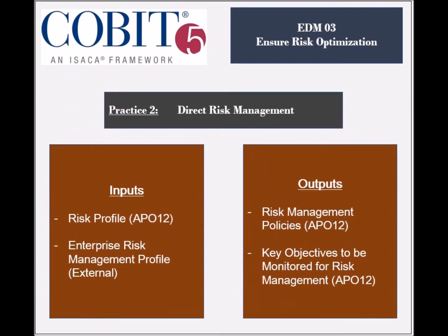The second practice, Direct Risk Management, receives two inputs: the Aggregated Risk Profile from APO-12, and the Enterprise Risk Management Profile from External Sources. It produces several outputs which include the Risk Management Policies, and the Approved Process for Measuring Risk Management. All outputs are used by the APO-12 process.